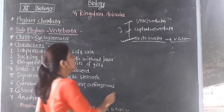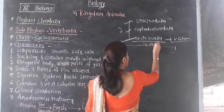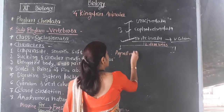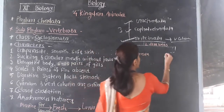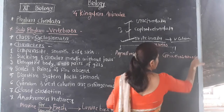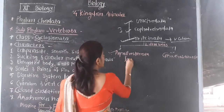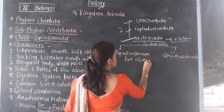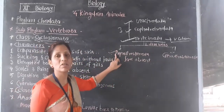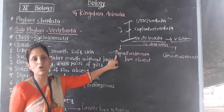Vertebrata is again divided into 2 main divisions: the first is Agnathostomata, and the second is Gnathostomata. In the case of Agnathostomata, jaws are absent — this is a special character of this division. So these animals belonging to division Agnathostomata are jawless animals.